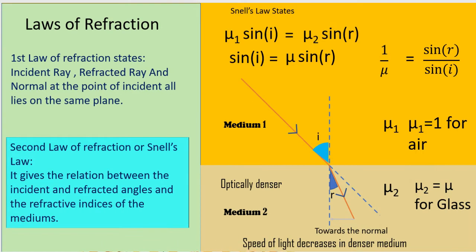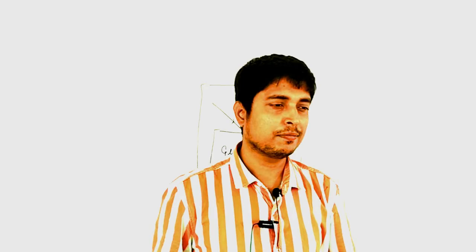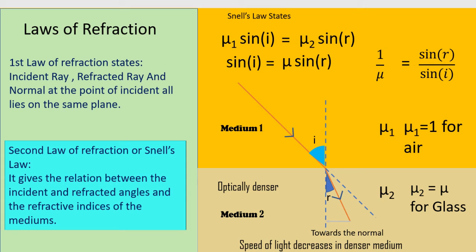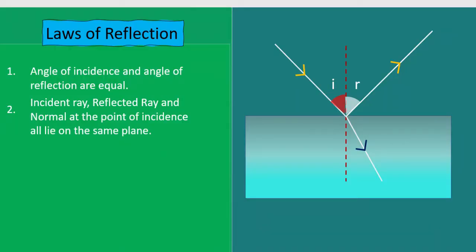Now we will formally state the law of refraction. The first law of refraction states that the incident ray, the refracted ray, and the normal at the point of incidence all lie on the same plane. This is also analogous to the second law of reflection.